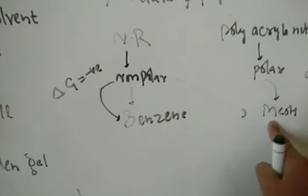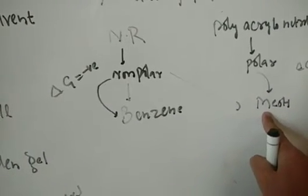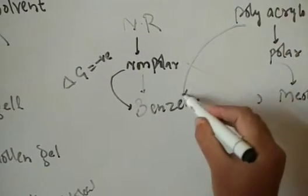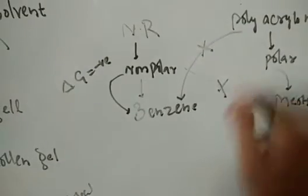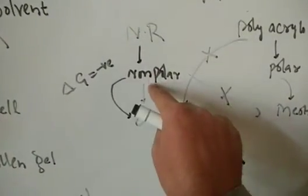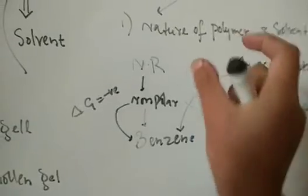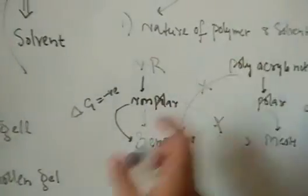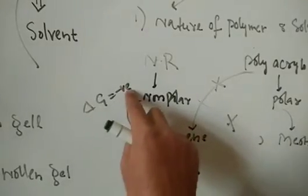Methanol is not a good solvent for natural rubber, and benzene will not dissolve polyacrylonitrile, because the interactions are not favorable in those cases. So benzene is a good solvent for natural rubber, and methanol is a good solvent for polyacrylonitrile. The nature of the solvent and the polymer is one of the important factors helpful in predicting solubility, because it determines whether the free energy change is negative.